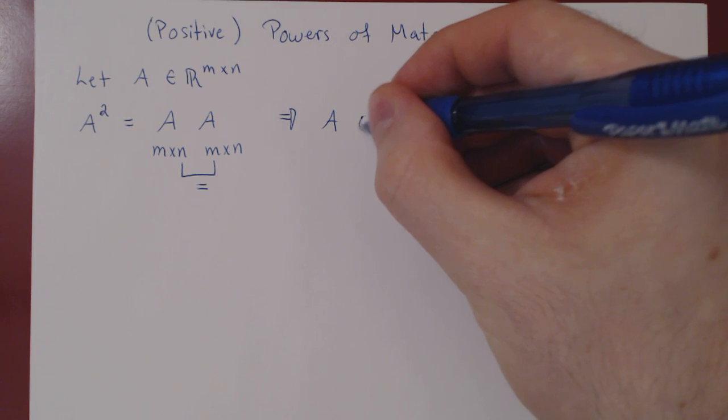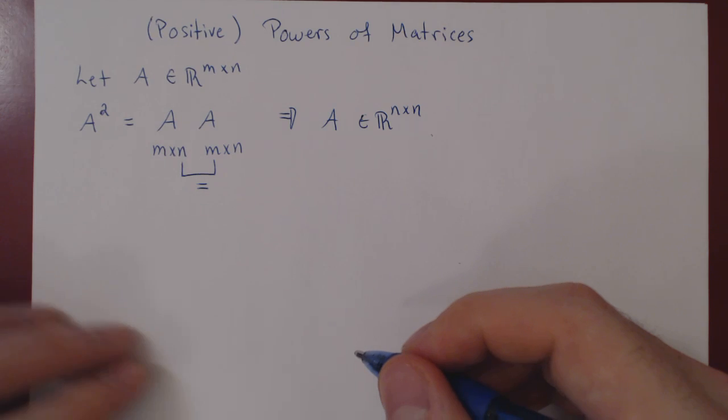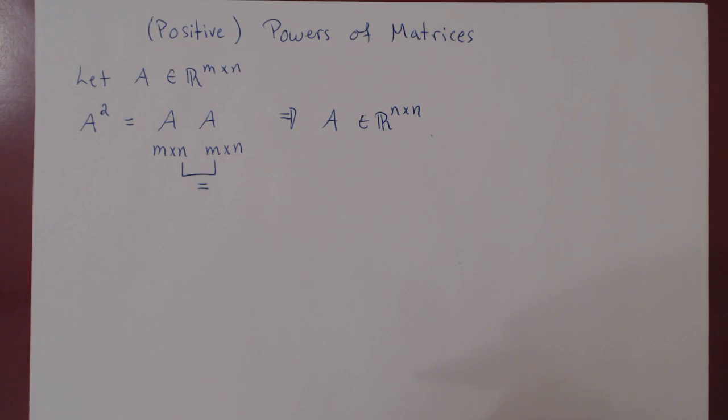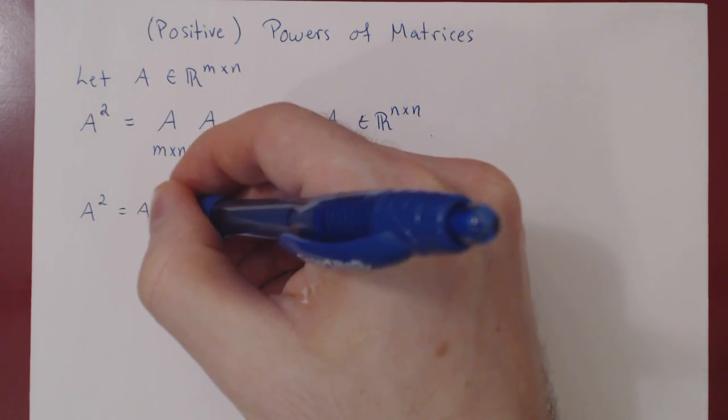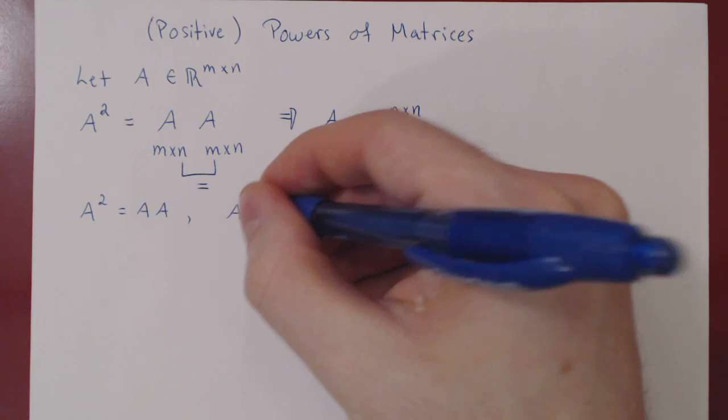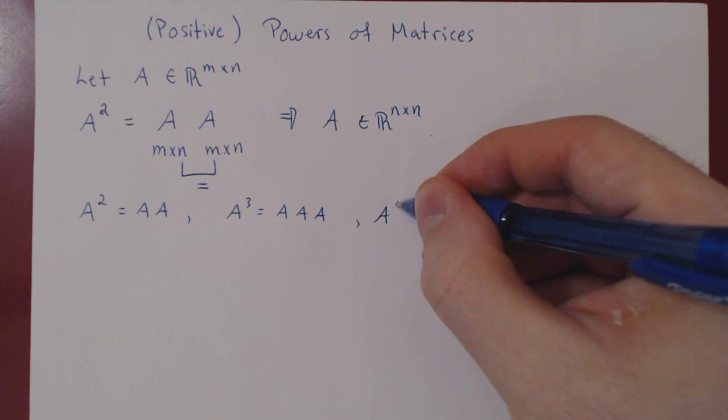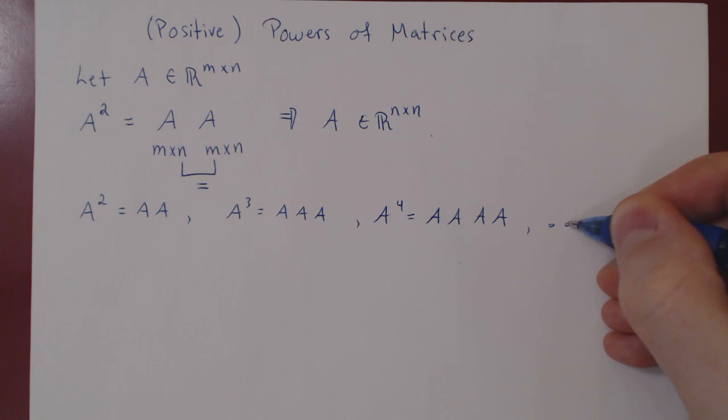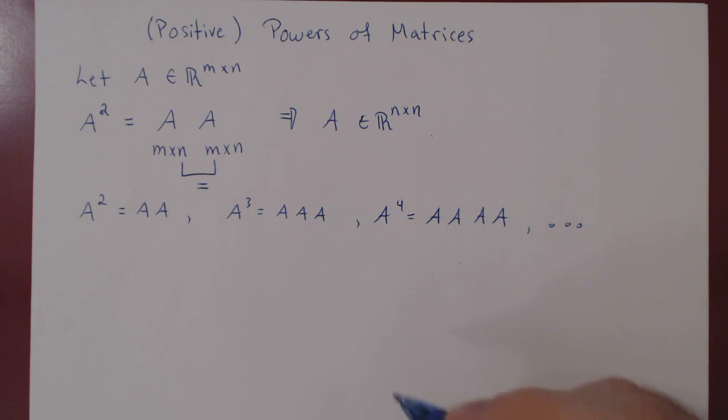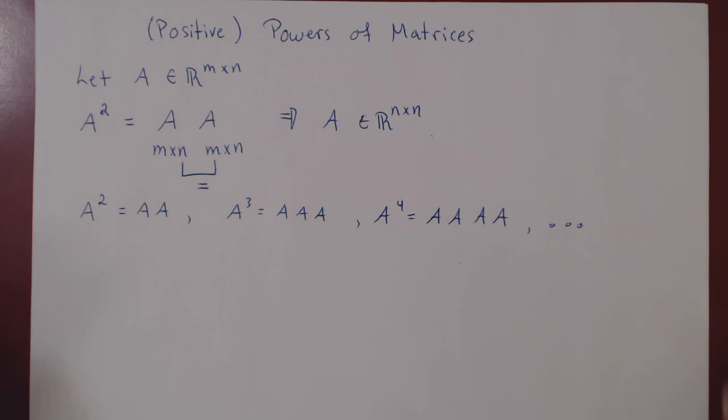Okay, well what if we have a square matrix? Then we're good to go. So A squared, of course, is simply A times A. A cubed is going to be naturally A times A times A. A to the 4, naturally A times A times A, and so forth. So in general, if you say A to the k, where k is a positive integer, you simply multiply A with itself k times. Let's do a simple example.